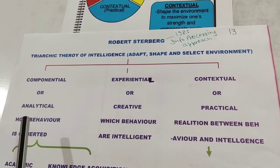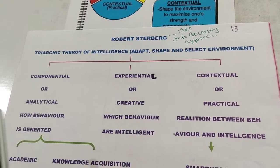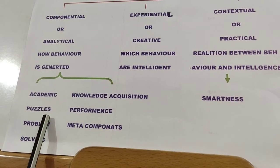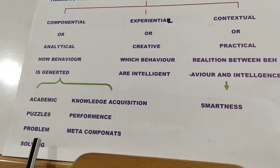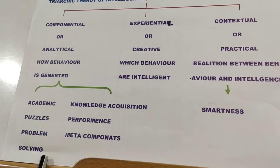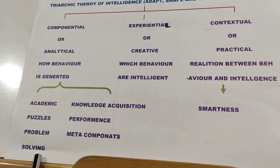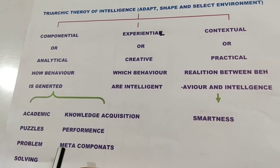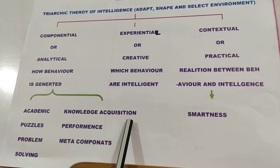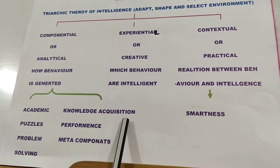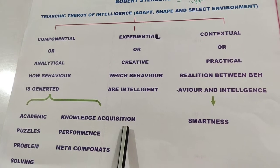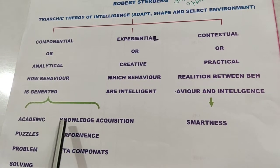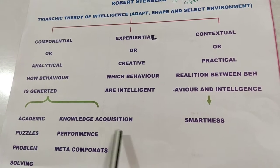People who have higher componential or analytical intelligence tend to be very good in academics, puzzle solving, and problem solving skills. The three main sub-components of componential intelligence are: first, knowledge acquisition — when a problem is in front of us, our first step is to acquire all knowledge related to that problem.